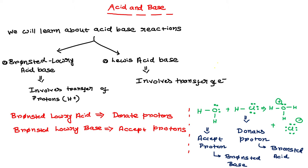Welcome back to my channel Kembarsis. In this lecture I am going to discuss about acid and base. This is the very first lecture on this topic, which will be divided into several lectures. First of all, we will learn about what is called an acid and what is called a base. There are two theories of acid and base: the first is called the Bronsted-Lowry acid-base theory, and the second is called the Lewis acid-base theory.